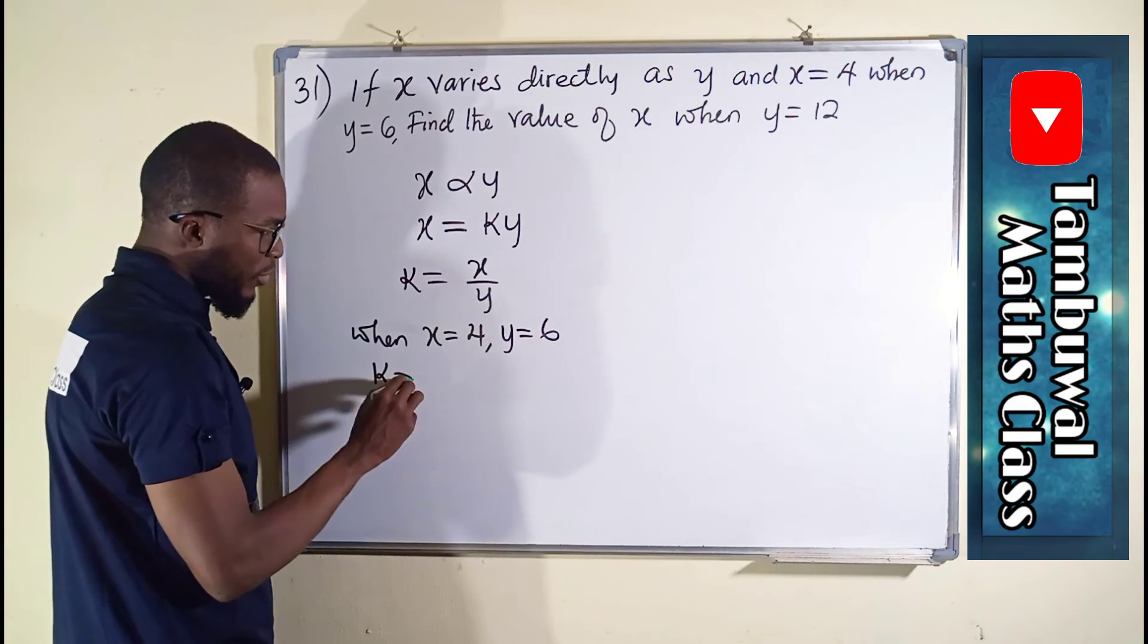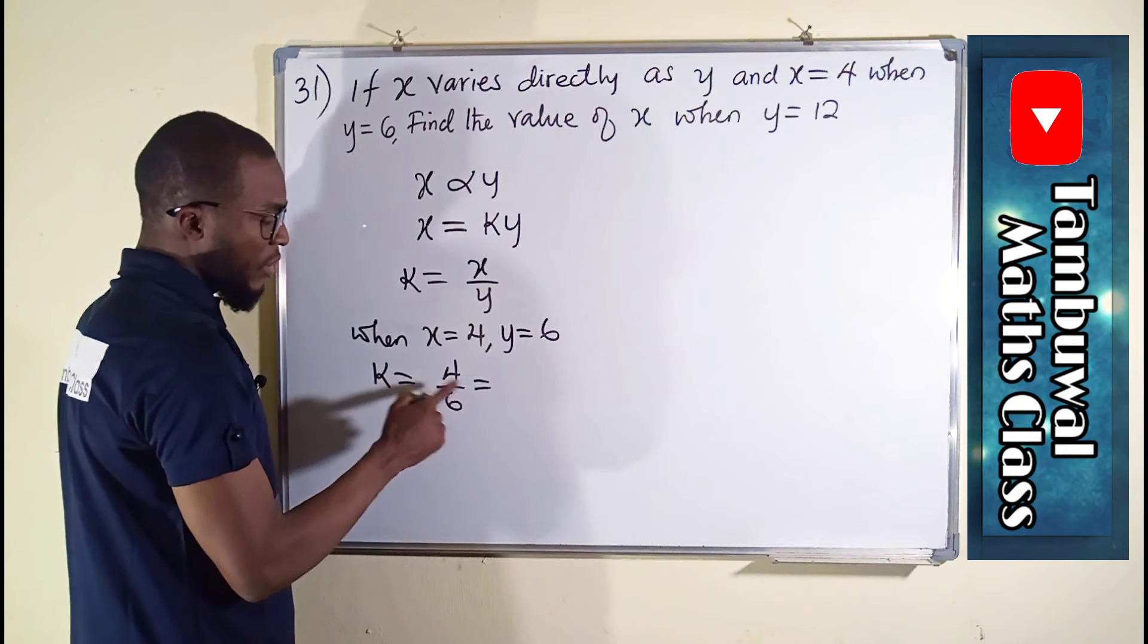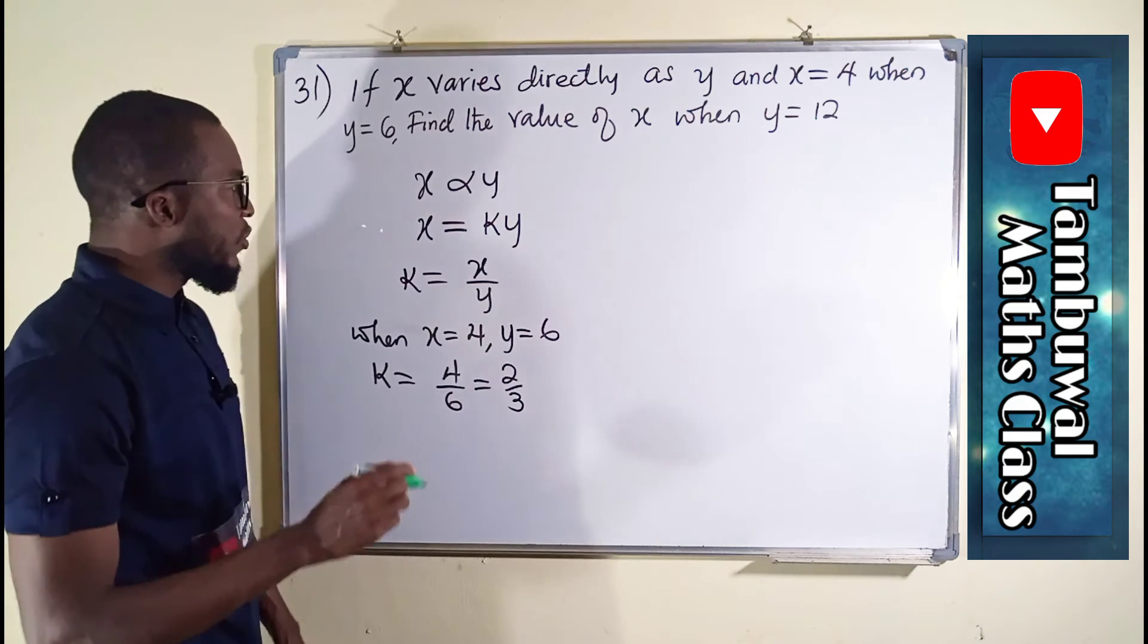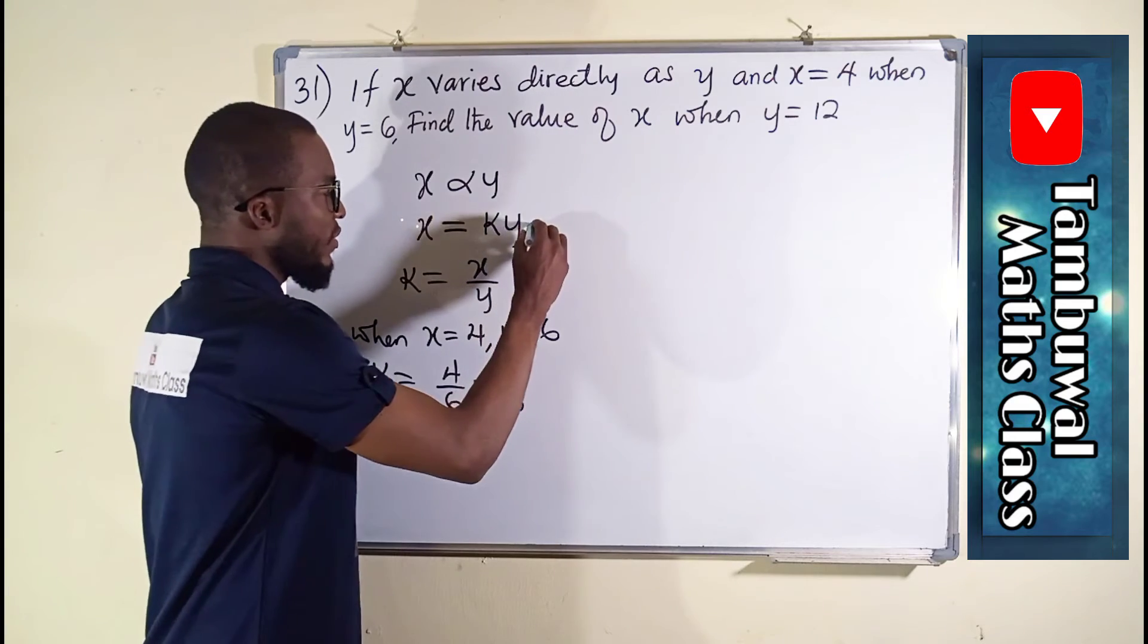We have k equals 4 over 6. In lowest terms, we have 2 over 3.